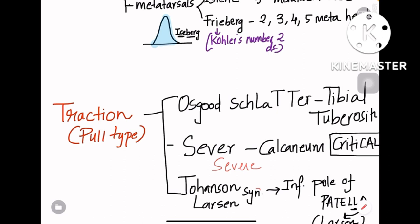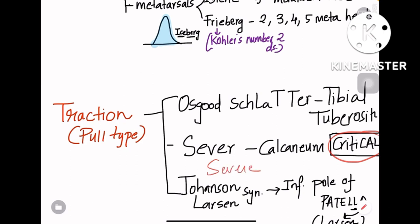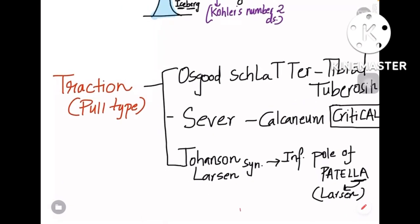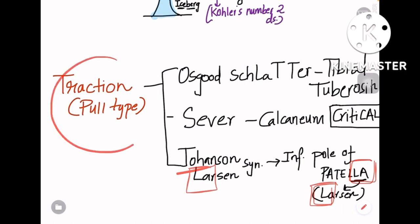Severe means critical, and 'crit-cal' gives you calcaneum — so Sever's disease is osteochondritis of the calcaneus. Coming to Johansson-Larsen syndrome, patella has 'la' — Larsen — so Johansson-Larsen is osteochondritis of the inferior pole of the patella. This completes the traction type.